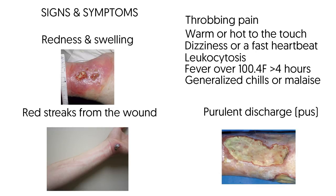The area may be warm or hot to the touch. Purulent discharge or pus collected beneath the skin or draining from the wound. A small amount of clear or slightly yellow colored fluid can be expected from a surgical wound, but if the fluid is cloudy, green, or foul smelling, this indicates an infection. Dizziness or a fast heartbeat, generalized chills or malaise, and a fever over 100.4 degrees Fahrenheit for more than four hours are signs of a localized systemic infection.